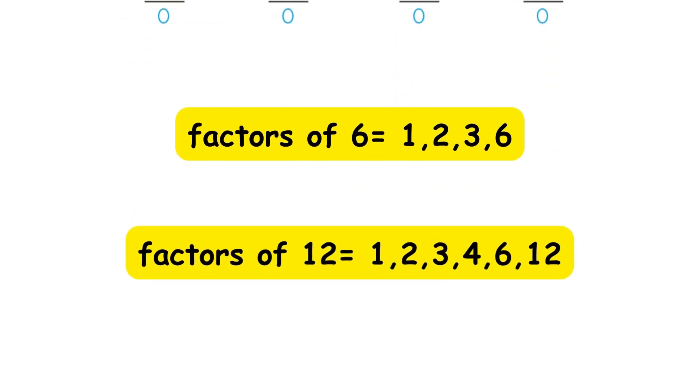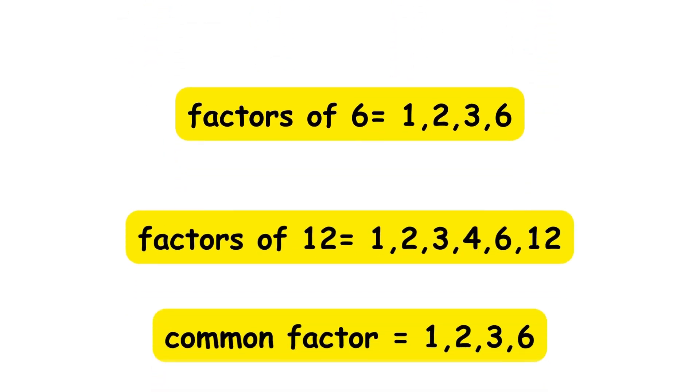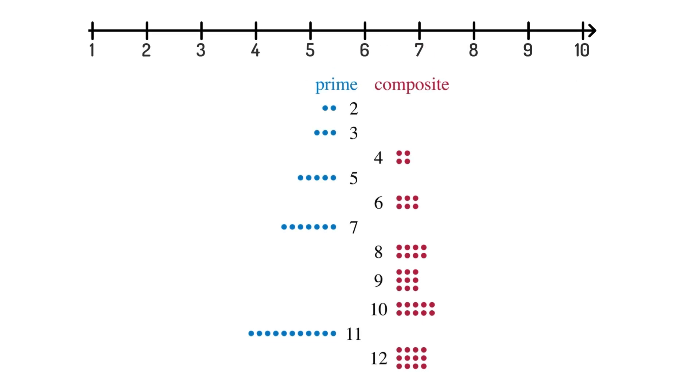If two numbers share a certain factor, that is called a common factor. Any whole number greater than 1 can be put into one of two groups: prime numbers and composite numbers.